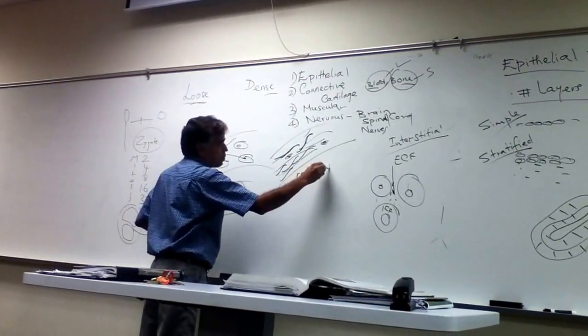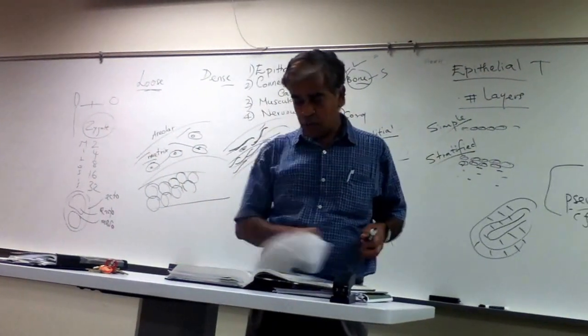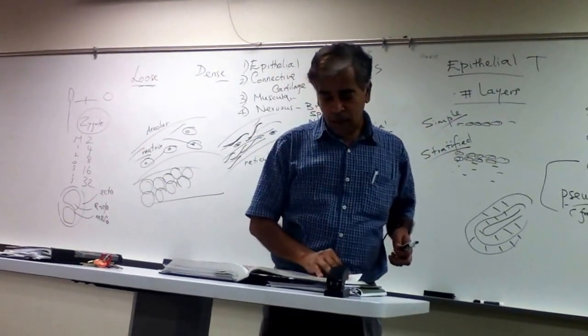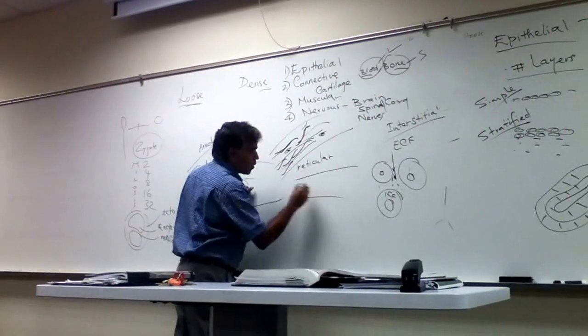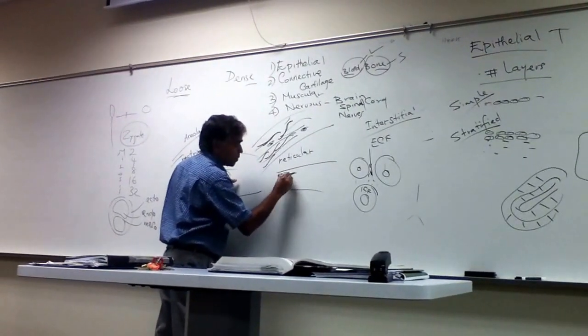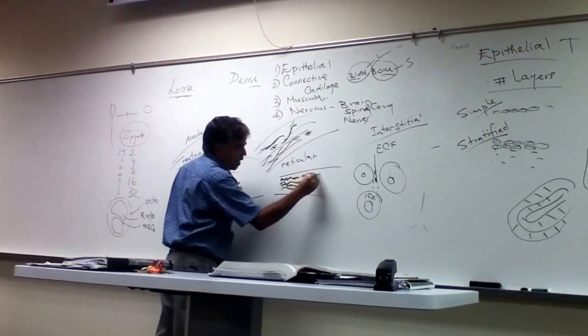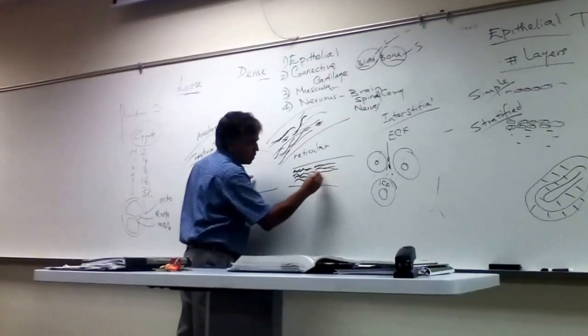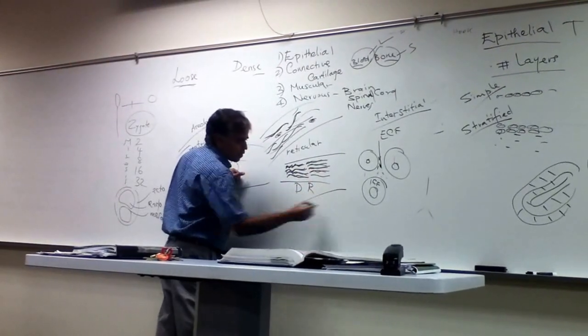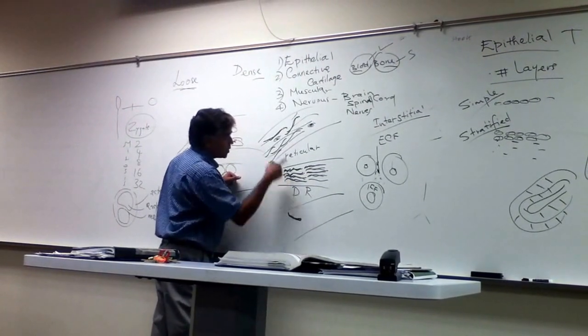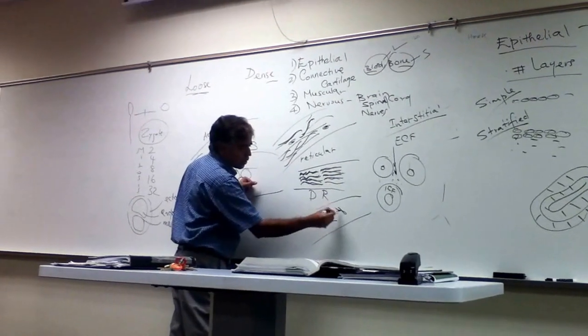And then you have dense regular connective tissue and dense irregular connective tissue. So the dense connective tissue, if it is regular, the tissue will be very dense. If you notice the packaging of the fibers, they will have the same pattern. So they call it regular, dense regular. The dense irregular, if you see, the fibers will be much thicker than these. And they will be randomly arranged, irregular arrangement.